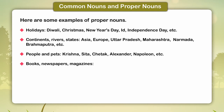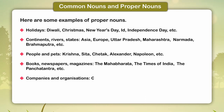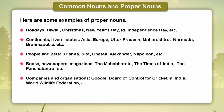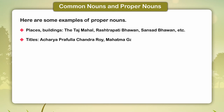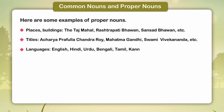Books, Newspapers and Magazines: The Mahabharata. Notable people: Acharya Prafullachandra Roy, Mahatma Gandhi, Swami Vivekanand, etc. Languages: English, Hindi, Urdu, Bengali, Tamil, Kannada, etc.